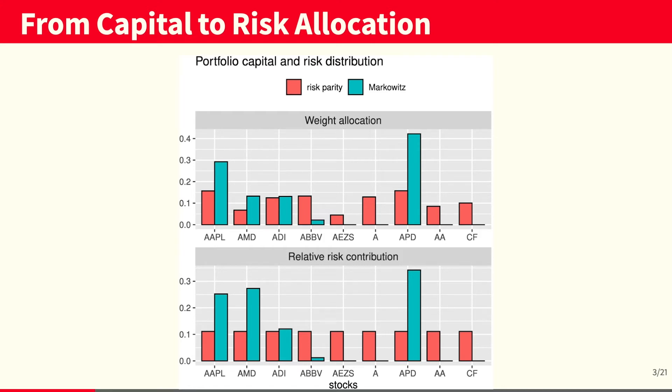On the top chart, we see the weight allocation for risk parity and Markowitz. At first, we can see that Markowitz allocates a lot of money into only a few selected stocks, whereas risk parity presents a more diversified portfolio.